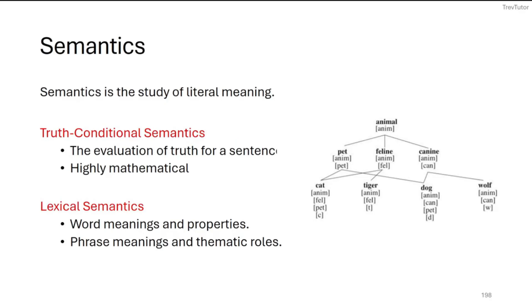Semantics is about the study of literal meaning. There are two different subfields of semantics that are usually investigated. One is truth-conditional semantics, which is very mathematical. It is about determining how you can figure out the truth of a sentence depending on the meaning of its parts. We are not going to focus on truth-conditional semantics. Instead, we'll focus on lexical semantics, which is about word and phrase meanings and their different properties.